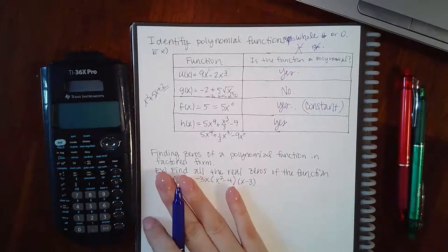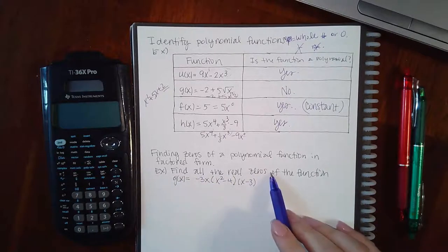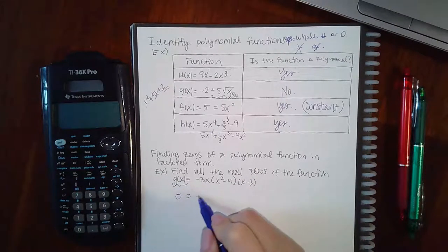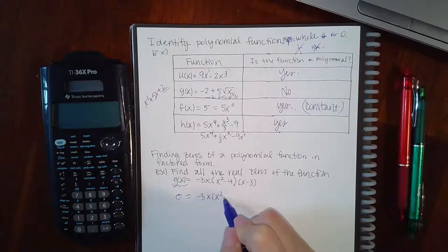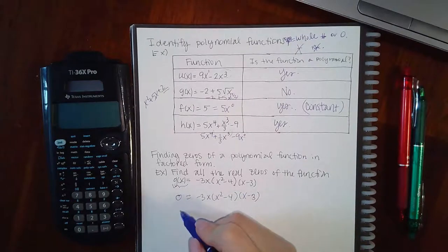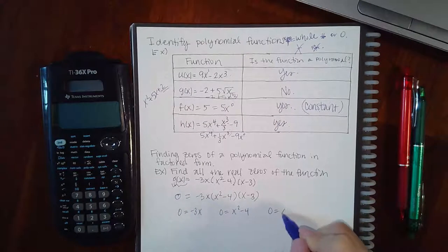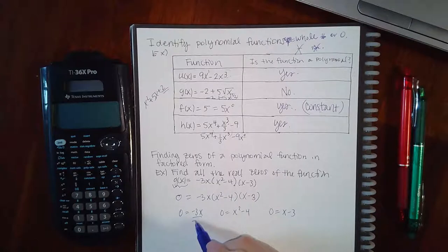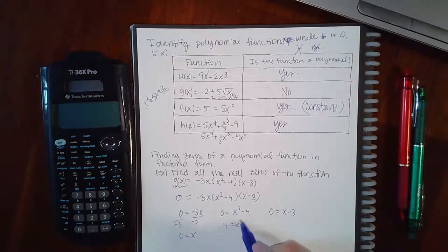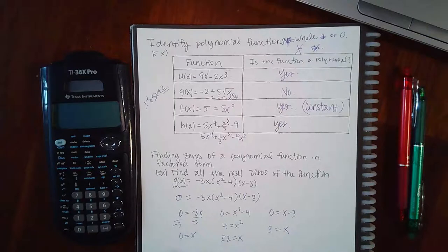The next topic is finding zeros of a polynomial function in factored form. This one's just like the previous one. If you're finding the zeros, all you're doing is taking your y value and setting it equal to zero. What's nice about this problem is they've already factored everything for me, so I just have to set each factor equal to zero. I have this factor equal to zero, the middle factor equal to zero, and the right-sided factor equal to zero. Here I get x equals zero. Here I get plus or minus 2, and here I get 3.